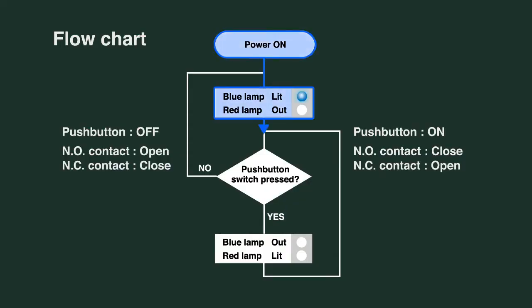This flowchart shows that when the power is turned on, the blue light turns on and the red light turns off. Then, depending on whether the push button is on or off, operation either returns to the beginning or proceeds to another step. In this case, turning the blue light off and turning the red light on.